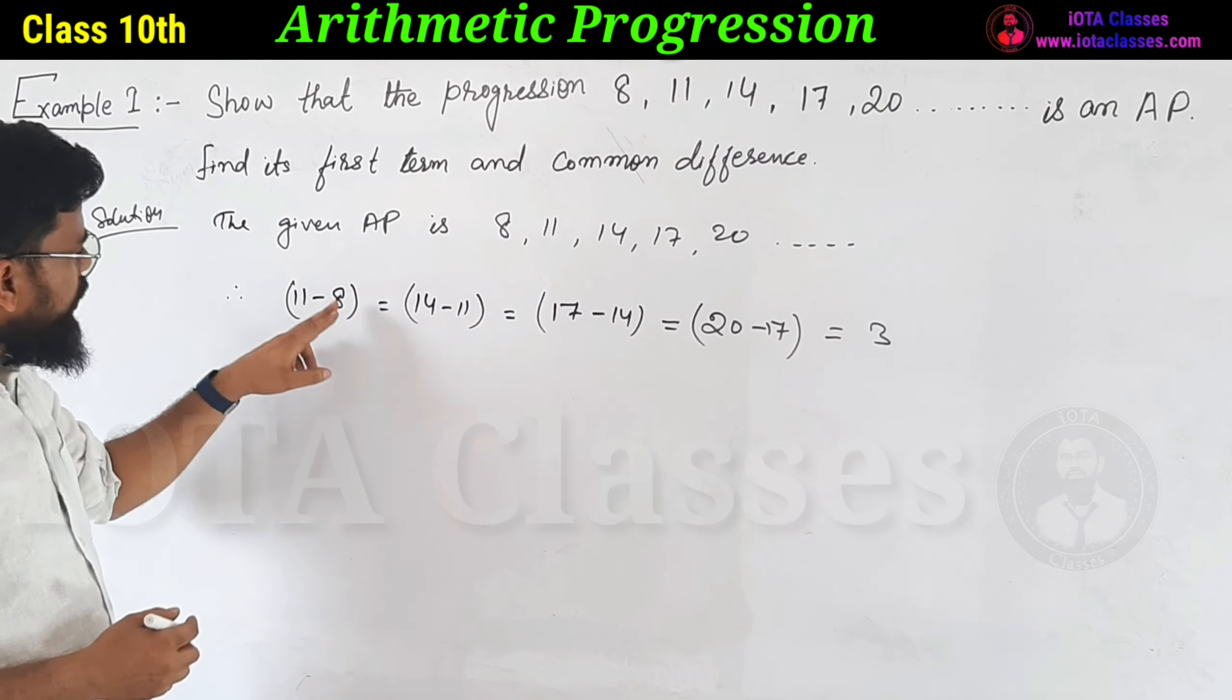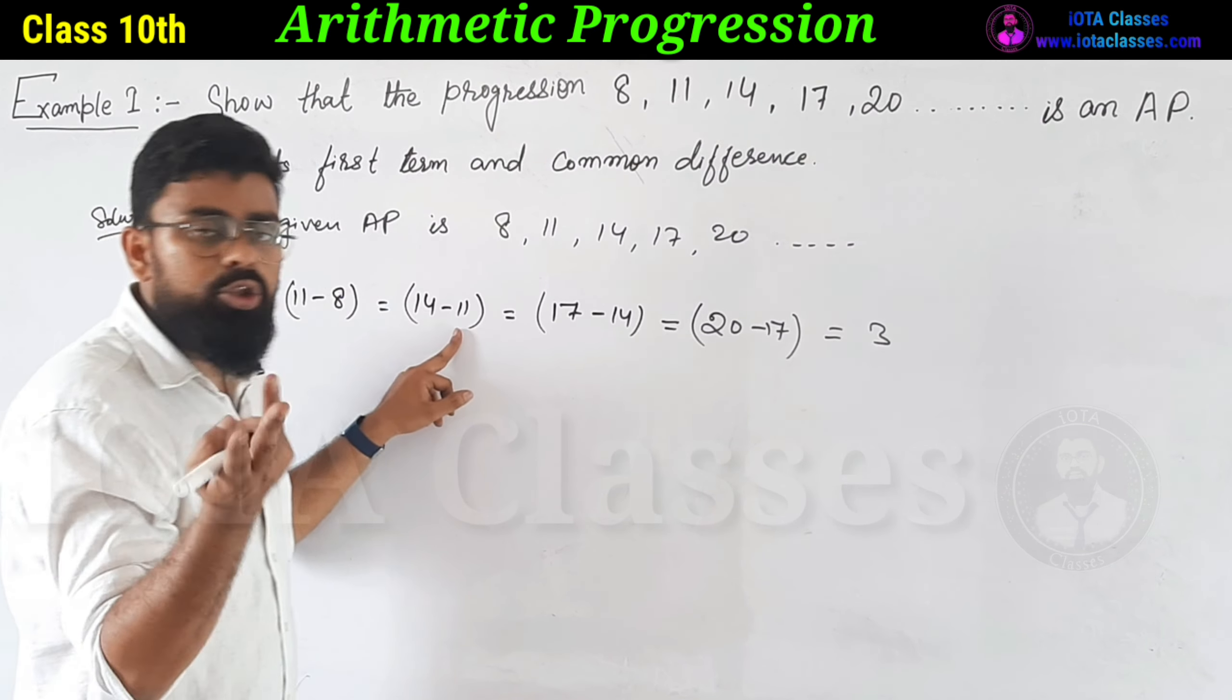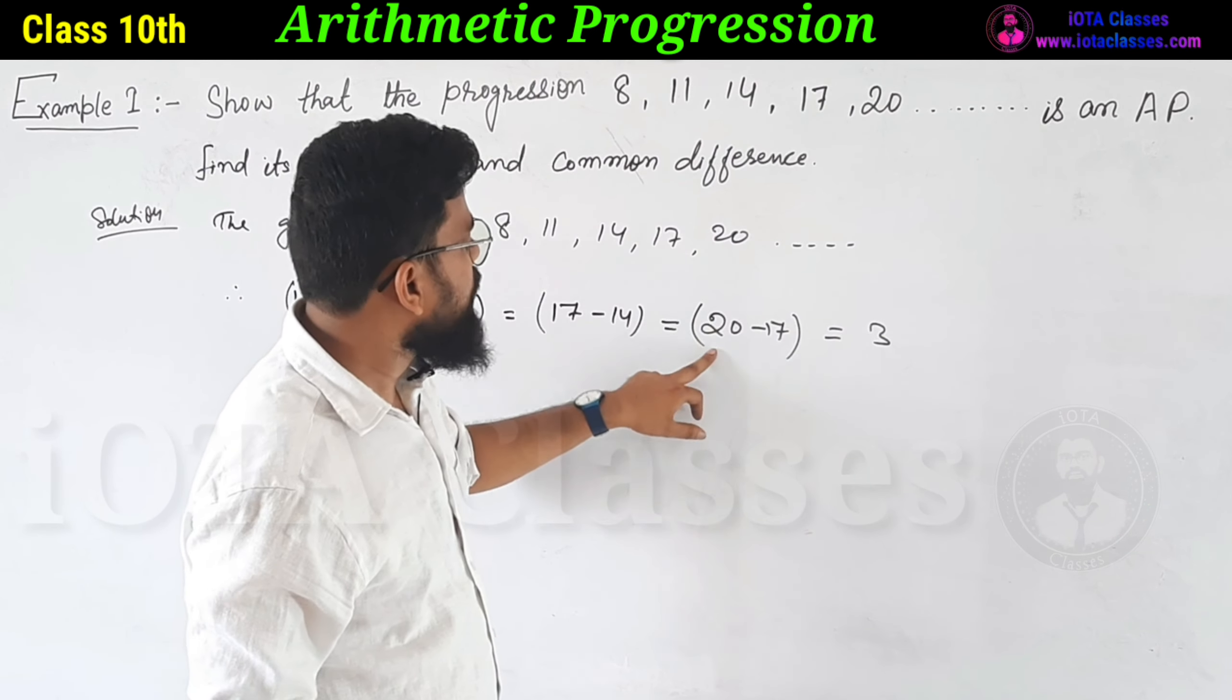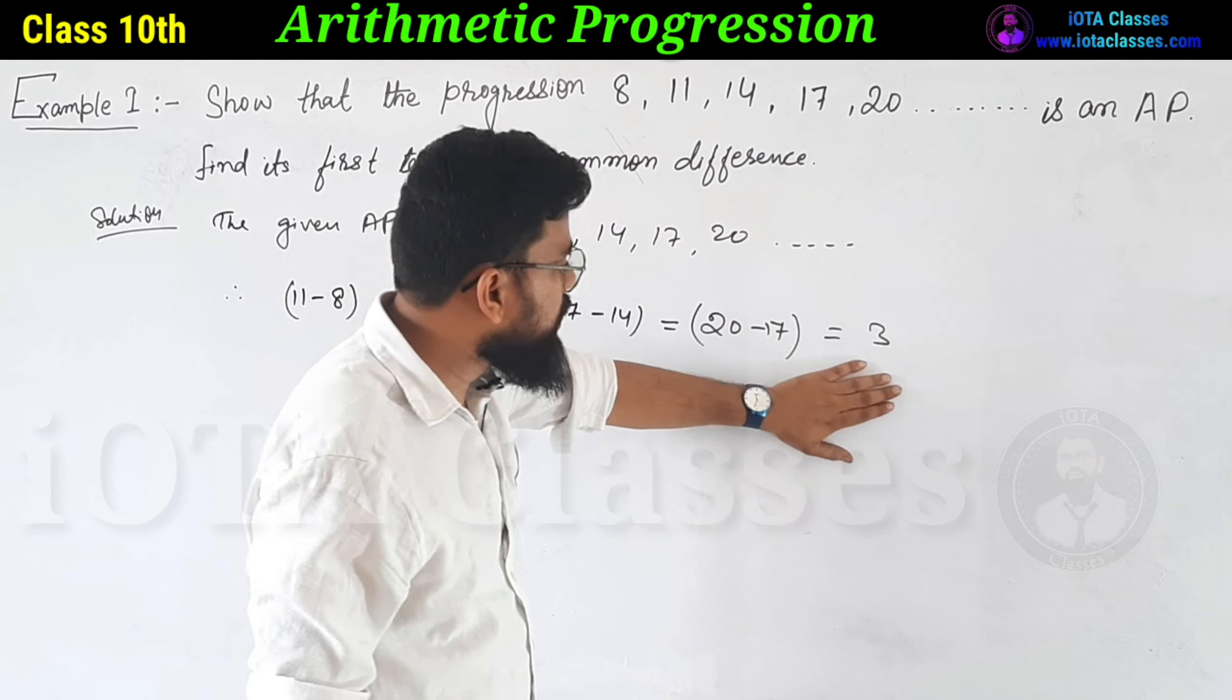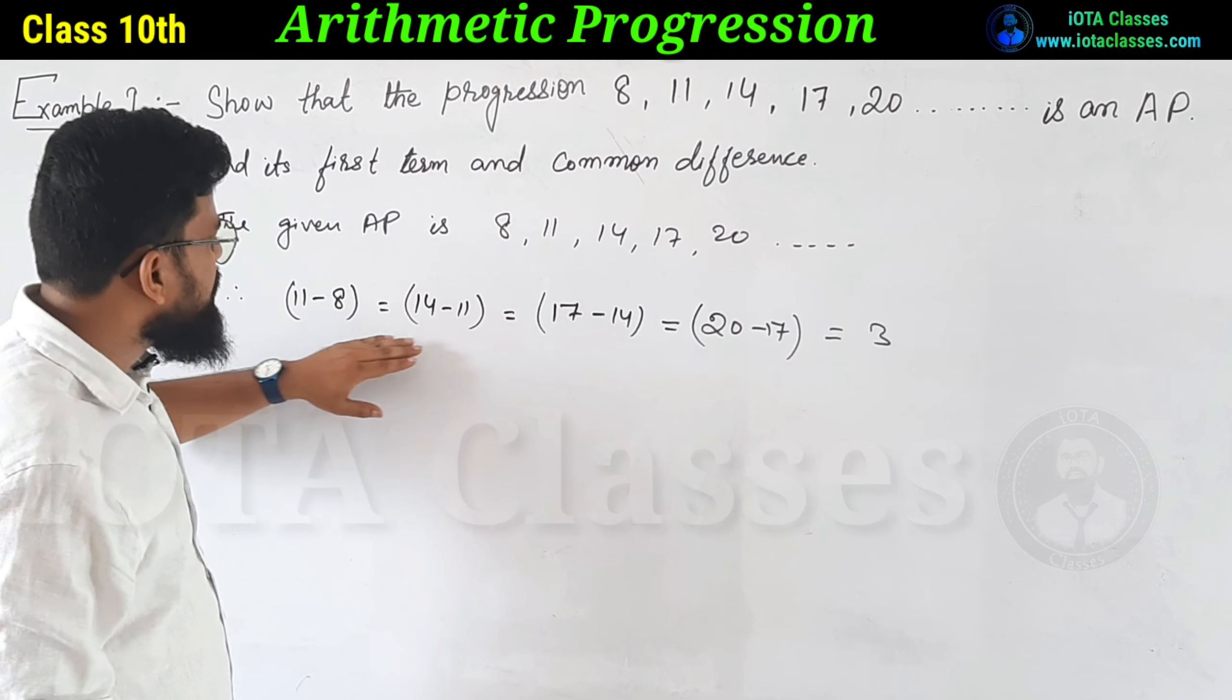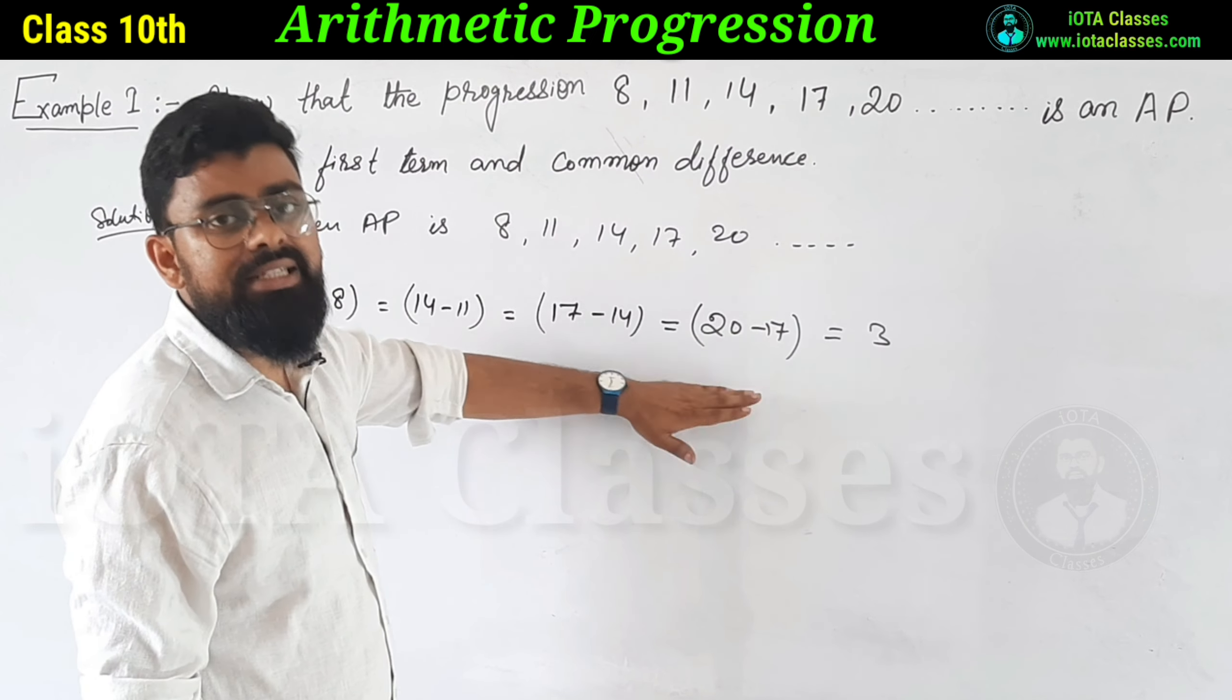Because if we take any consecutive terms: 11-8 is 3, 14-11 is 3, 17-14 is 3, 20-17 is 3. So what is that constant term? This constant term is the common difference. Thus it is in AP.